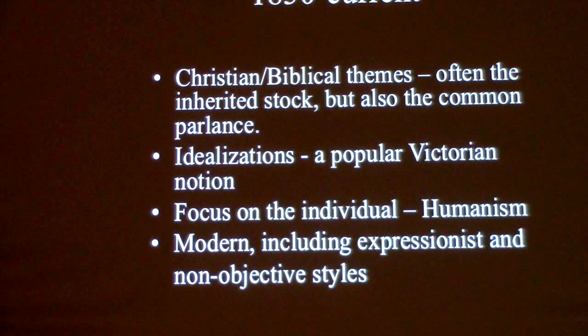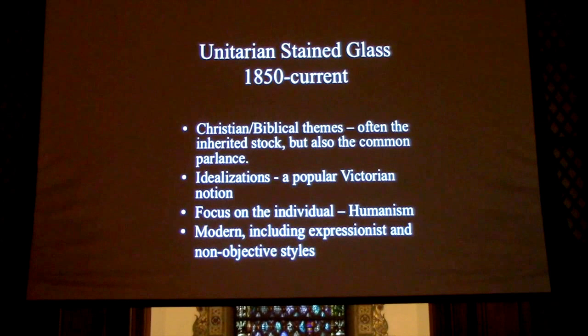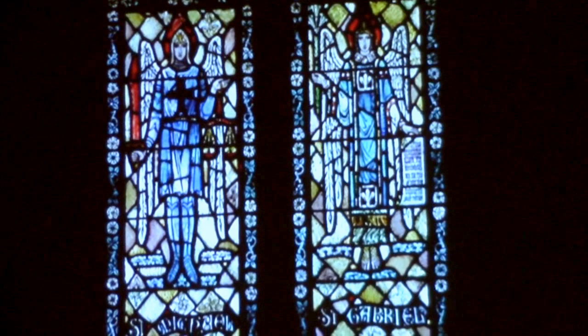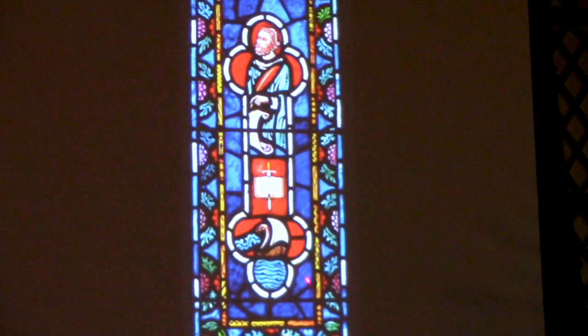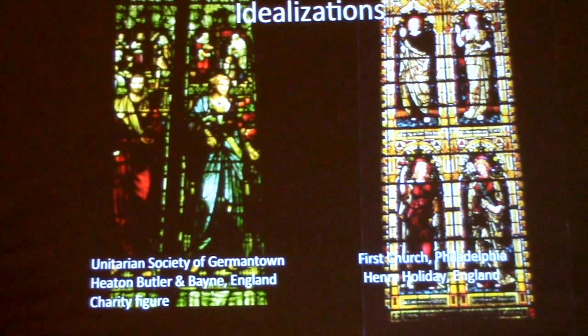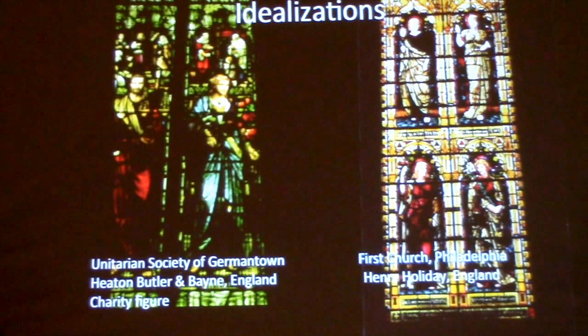I've divided Unitarian stained glass into the inherited stock — Christian biblical themes — and part of the common parlance: many Unitarians consider themselves Christian and still do. Idealizations were popular in the Victorian period. Here is an image of some Christian-themed windows: the archangels on the left at a Unitarian church in Massachusetts, and St. Paul and his voyages and writings at Restoration Church, Stenton and Gorgas Lane.